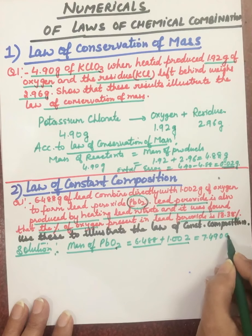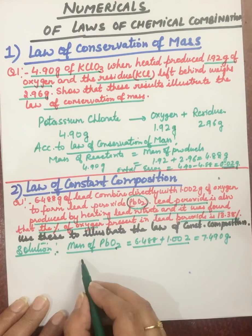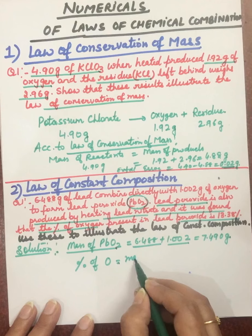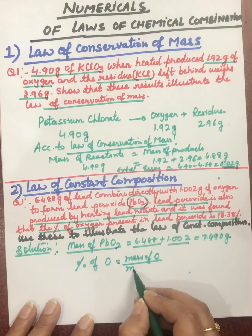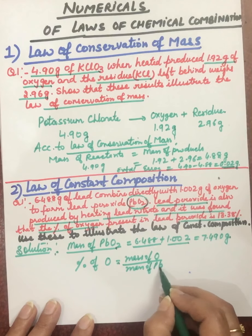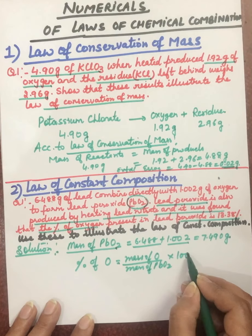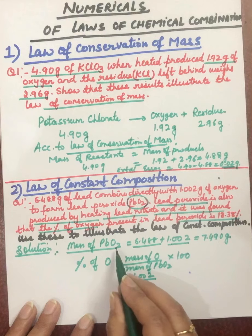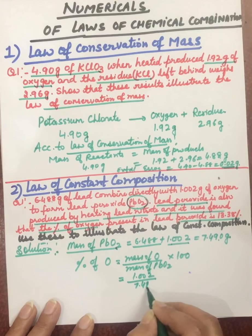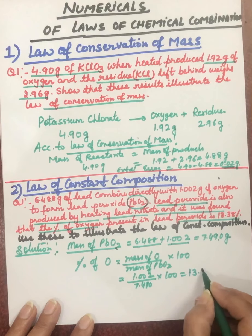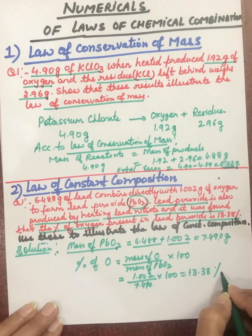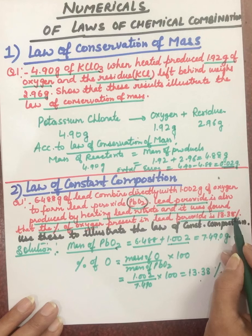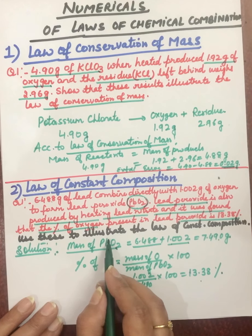Percentage of oxygen equals mass of oxygen upon mass of lead peroxide into 100. Oxygen is 1.002 gram and mass of lead peroxide is 7.490 gram, so this is 1.002 divided by 7.490 into 100, which equals 13.38 percent. The percentage of oxygen the first time is also equal to that of the second case, meaning this illustrates the law of constant composition.